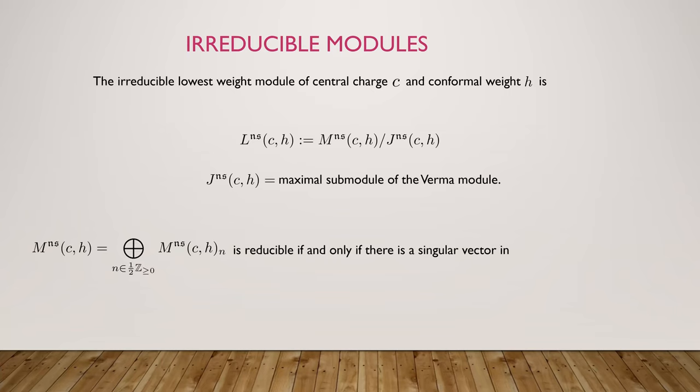A remark: just like with other theories, a highest weight module is reducible if and only if there is a singular vector in the strictly positive degree part. You want a singular vector that generates a proper submodule, and that will happen if and only if you have a singular vector there.